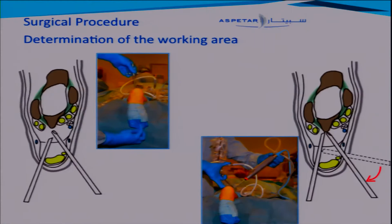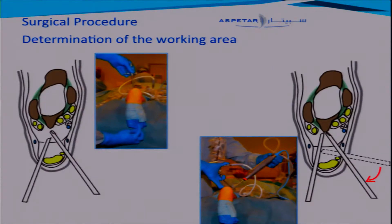I also thank Diana Sheik for making these web graphics to show how we work. It's important to have a safe procedure. We aim for the first web space when we enter the ankle on the posterior side. This is where we enter, and we stay relatively lateral to the FHL. And then we have the bone.